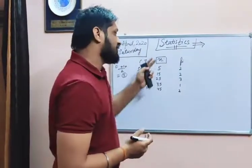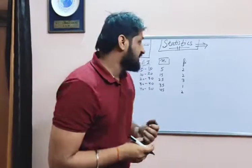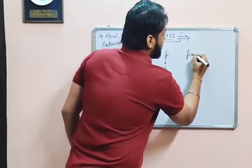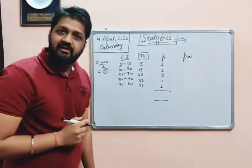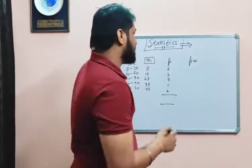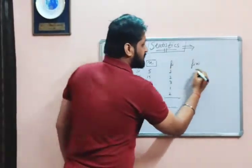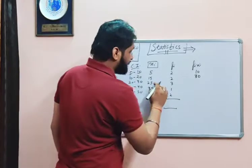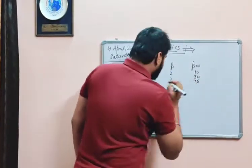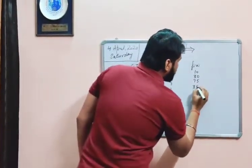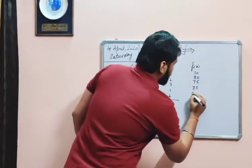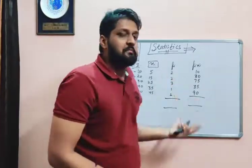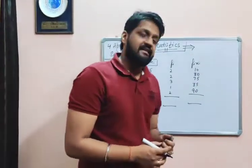We can get the various values of xᵢ. The next step is we have to multiply fᵢ and xᵢ. Here fᵢ is the frequency and xᵢ is the class mark. So: 5 × 2 = 10, 15 × 2 = 30, 25 × 3 = 75, 35 × 1 = 35, and 45 × 2 = 90.